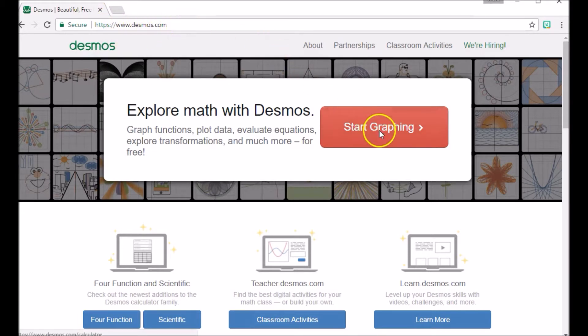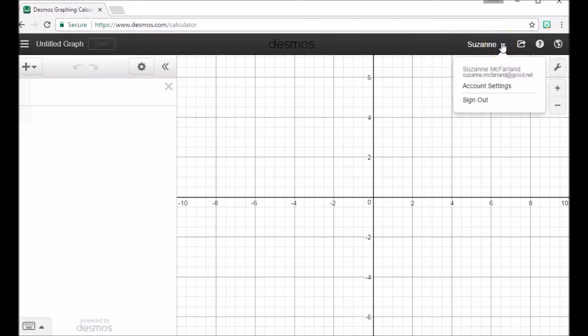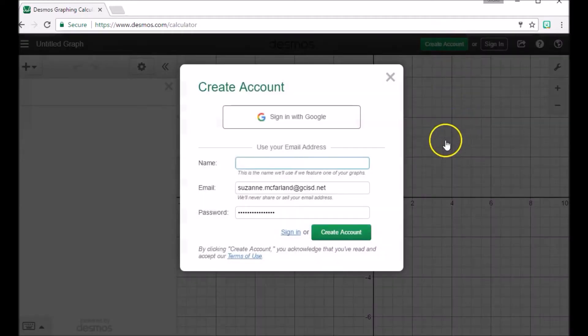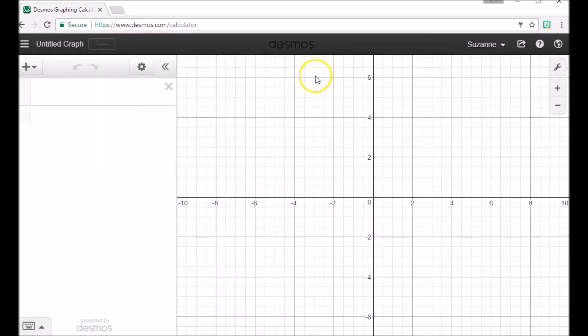We can push start graphing. Once you're there, I want you to notice that I'm already logged in here, but let me sign out. If you'd like to create an account, you can sign in with your Google or create an account with another email address. I think it's probably a good idea to maybe link it to your GCISD account, but I would sign in then.